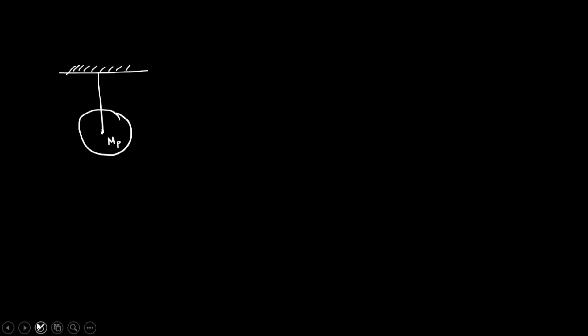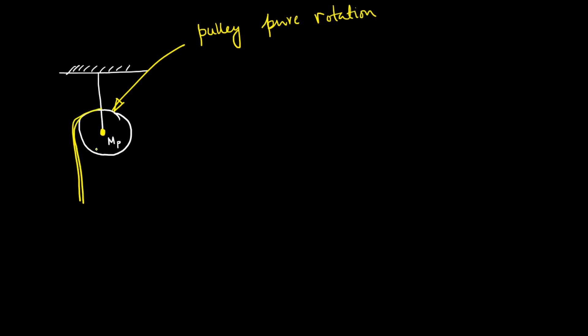This happens to be the pivot point of the pulley. The most important new thing in the problem is that the pulley is now going to be under pure rotation. There is a string passing over the pulley, and there are two masses — this one is called m1 in the textbook and this is called m2.